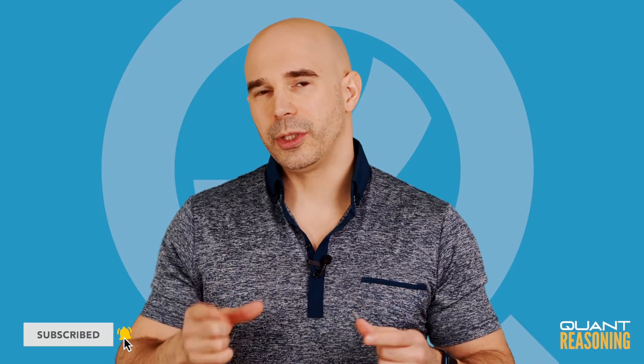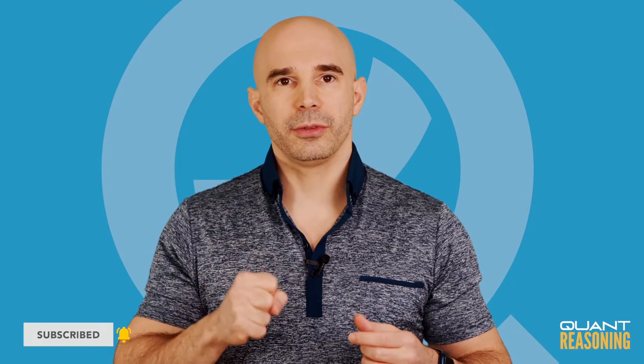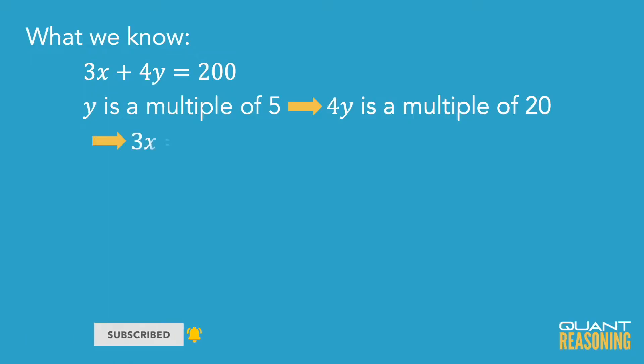Why is that? Well, because we're removing a multiple of 20 from a multiple of 20. 200 is a multiple of 20, 4y is a multiple of 20. When you remove a multiple of 20 from a multiple of 20, you're left with a multiple of 20.